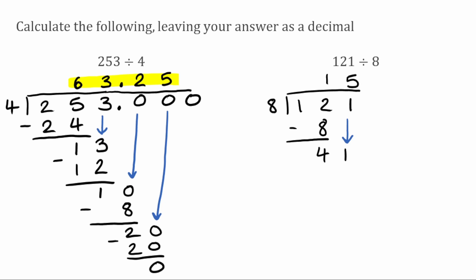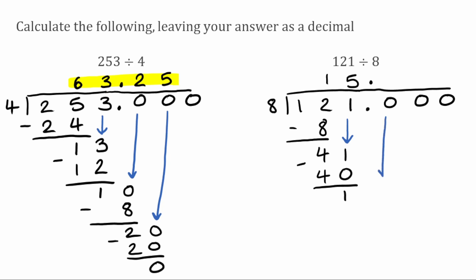That'll go 5 times because 8 times 5 is 40. 41 take away 40 leaves us with 1. We've reached our last digit, so we put a decimal place in our 121 and in our answer after the 15. We extend our line and put some zeros in — I'll use 3 again. We bring down the next zero so we've got 10. How many times does 8 fit into 10? That fits once because 8 times 1 is 8. 10 take away 8 leaves 2.